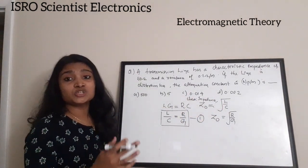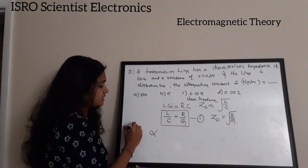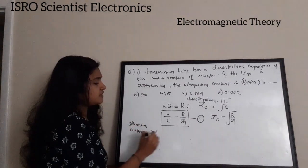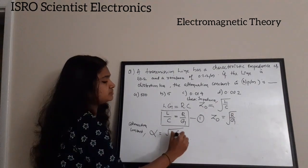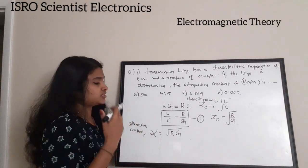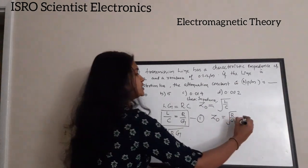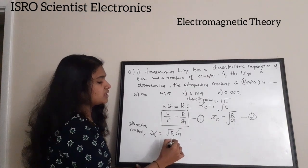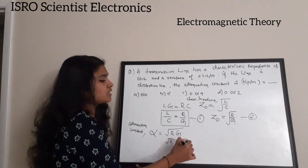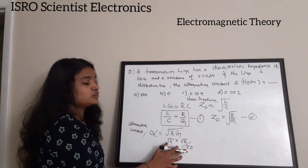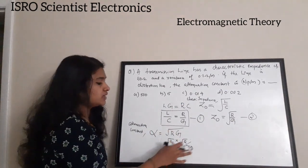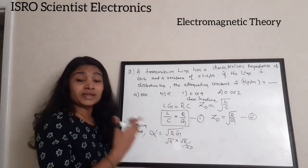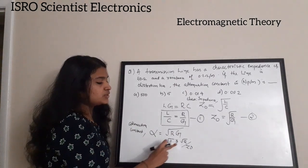The attenuation constant alpha is defined as α = √(RG). We can rewrite this by introducing the characteristic impedance term: α = √R · √(R/Z₀), because from equation 2 we know that G = R/Z₀².